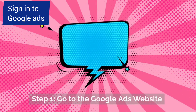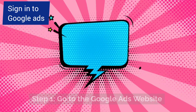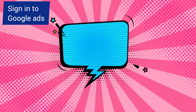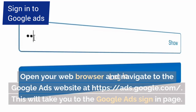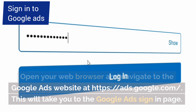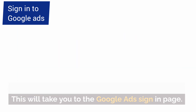Step 1: Go to the Google Ads website. Open your web browser and navigate to the Google Ads website at https://ads.google.com/. This will take you to the Google Ads sign-in page.